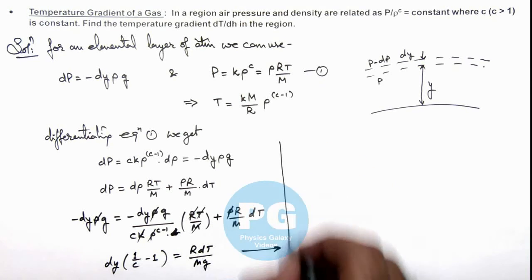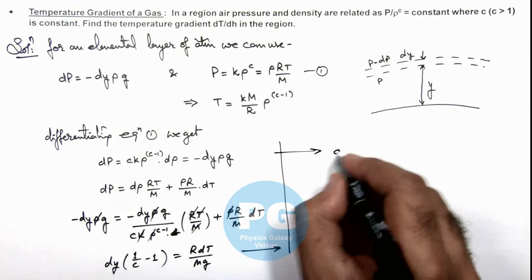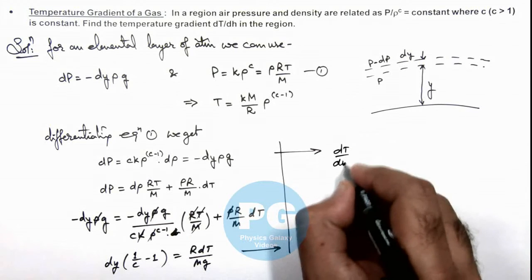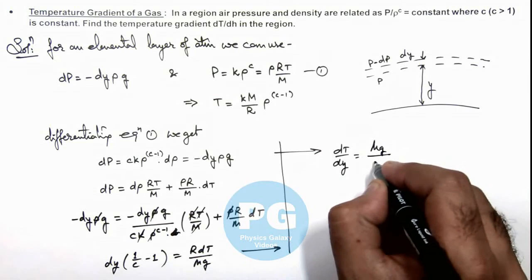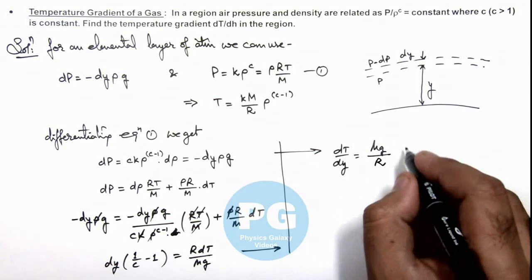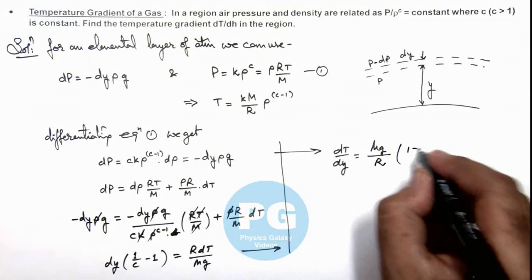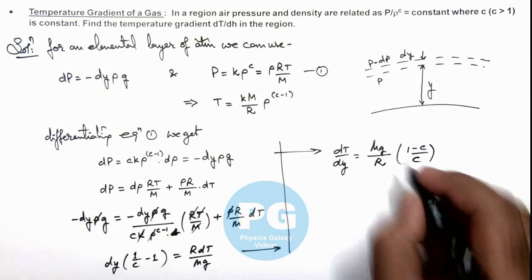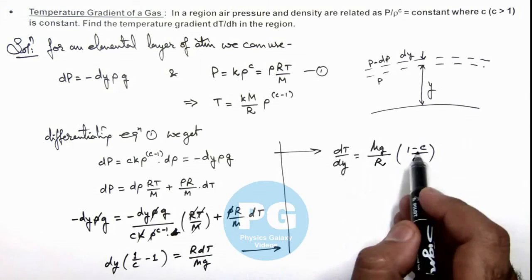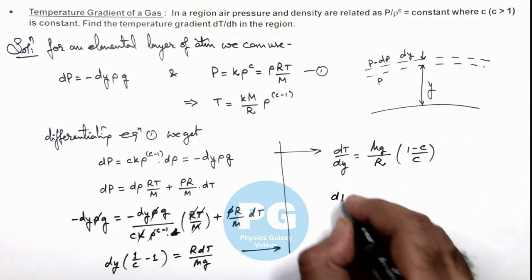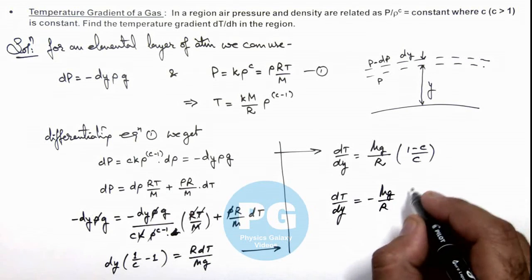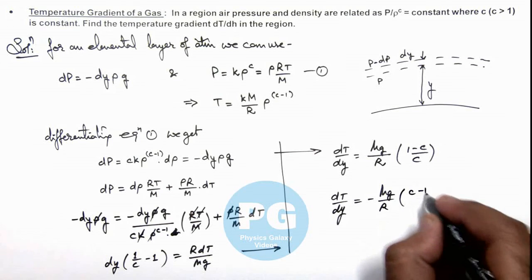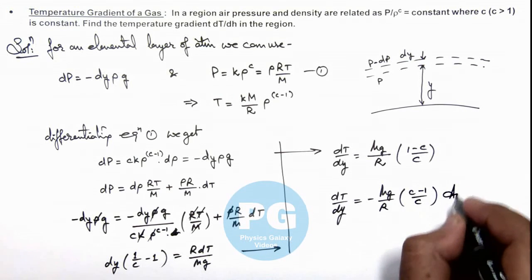And if we simplify this relation you can see the value of d t over d y directly we are getting is em g by r multiplied by 1 minus c by c. As we are given that c is greater than 1, we can take this negative sign out, which denotes that the temperature gradient is negative. It is minus em g by r multiplied by c minus 1 by c. That is the result of this problem.